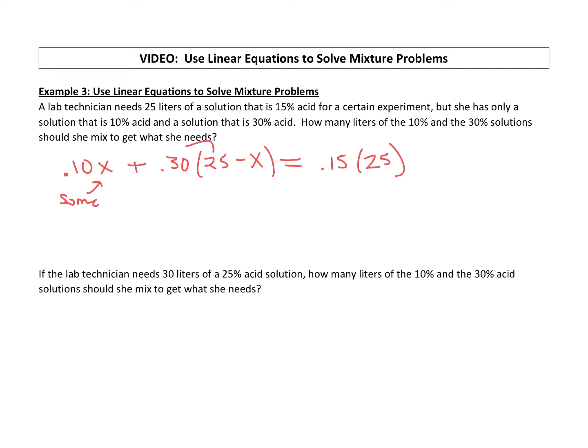We are going to do some distributing. Let's clean up this equation, so we have 0.10x + 7.5. Now 0.3 times a negative x is a negative 0.3x, equals, and then 0.15 times 25 is 3.75. Okay, combine like terms.